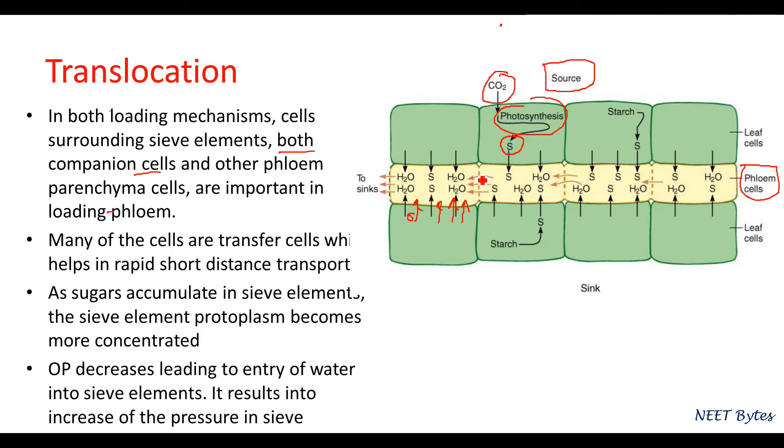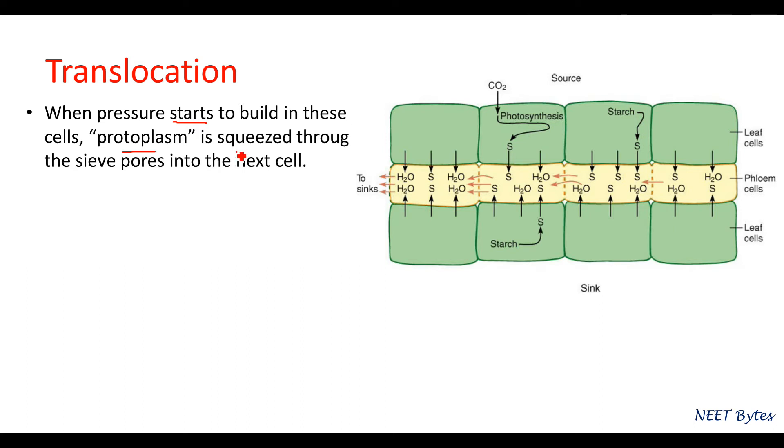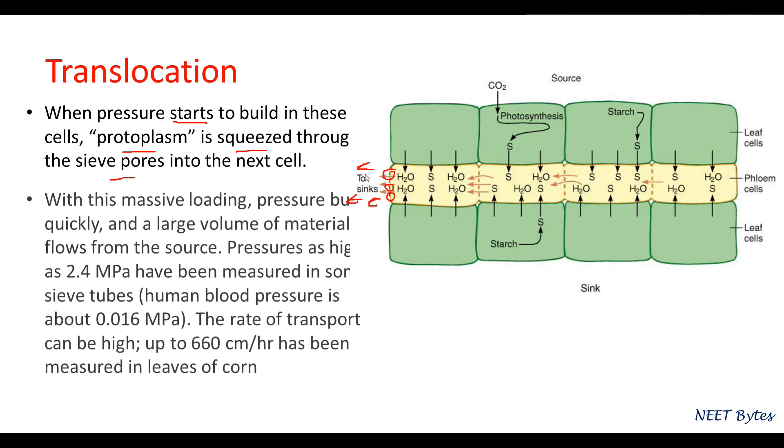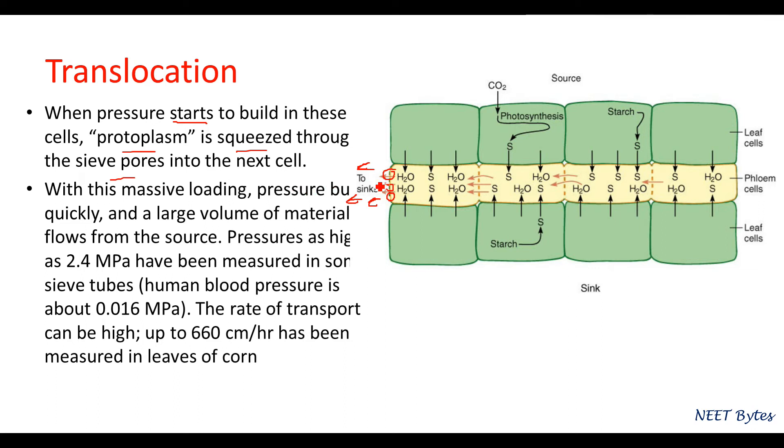Once sugar comes in, pressure develops inside the phloem cells. This pressure is utilized for the flow of the entire solute. At the source, pressure starts to build in the protoplasm and it is squeezed through the sieve pores. Through those sieve pores, the sap starts flowing.